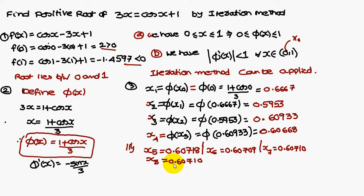Therefore, the approximate root of the equation is 0.60710. x7 and x8 give the same values, so the approximate root is 0.60710. Thank you.